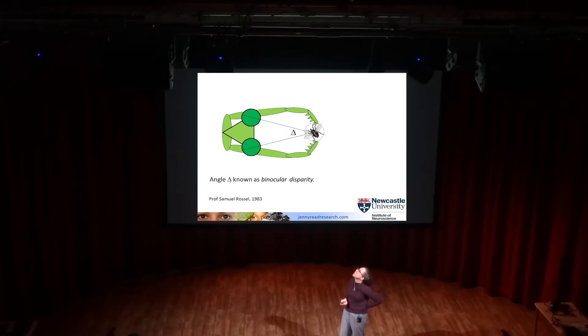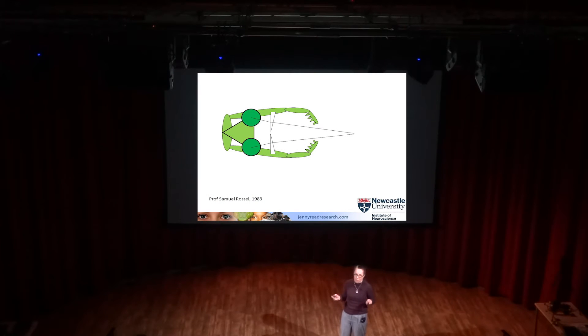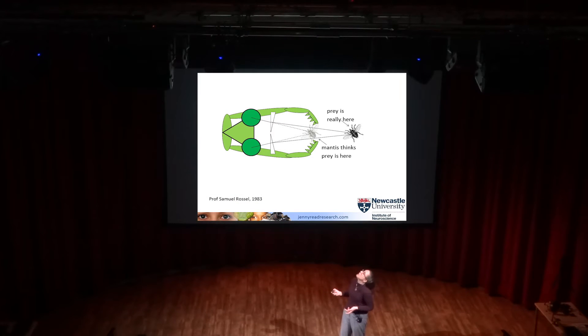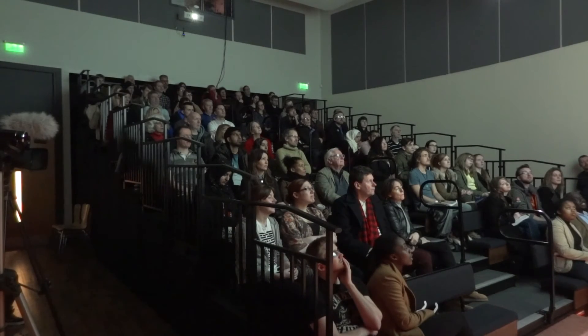They know prey is in range by measuring the angular disparity between the two eyes. To test this, Rossall had the fabulous idea of putting prisms in front of the animal's eyes. Prisms bend light rays, but the insect won't take that into account - it will perceive light as coming as if the rays were not bent. So when prey is really over there, the mantis perceives it as much closer and within range, reaches out to catch it, but misses. From the pattern of errors, Rossall deduced that mantises have 3D vision.